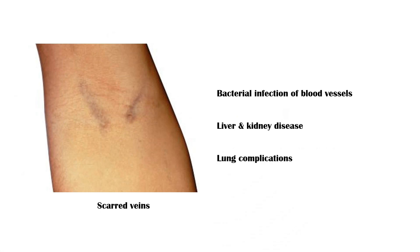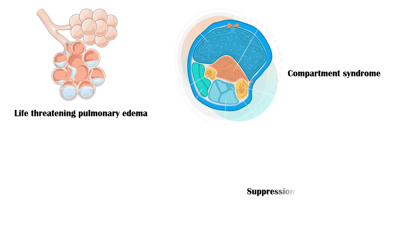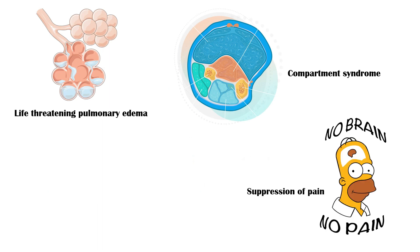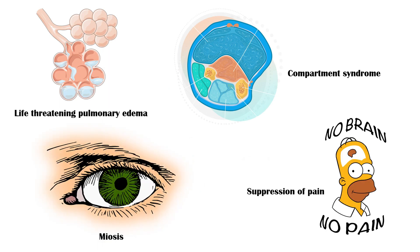Other complications of heroin use may include life-threatening pulmonary edema, compartment syndrome, suppression of pain, and miosis. Given the multitude of adverse effects of heroin, the take-home message from this video should be: one should never try heroin for the feeling of euphoria in their lifetime.